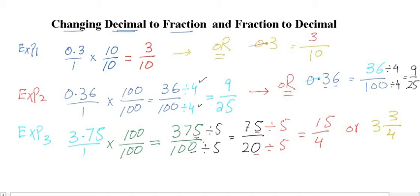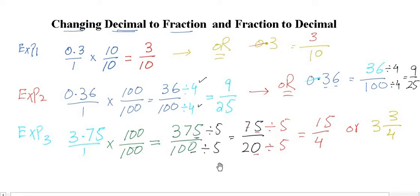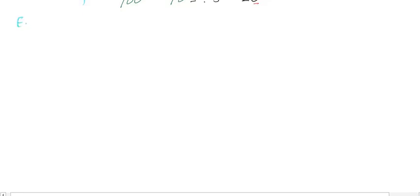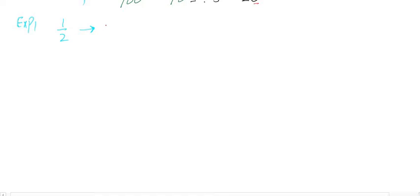Now let's see how we can change a fraction to a decimal. In example number one, we are given the fraction 1/2 and need to change it into a decimal. There are two ways — a hard method and an easy method. Starting with the hard method: write 1 divided by 2.